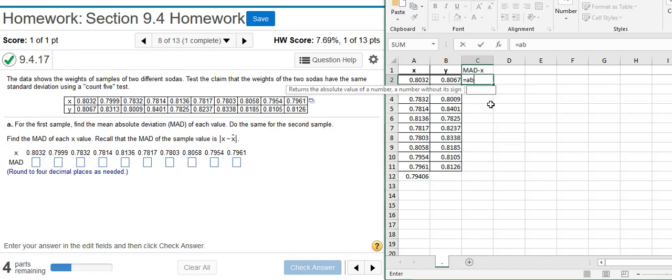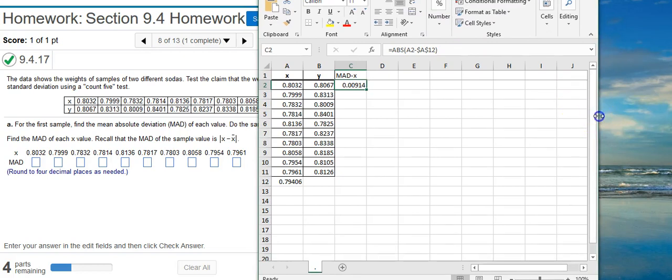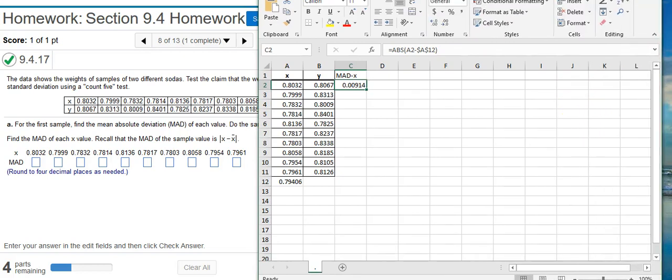So I'm going to put equals. Here's my absolute value function, ABS. Select my X. Minus X bar. It's down here at the bottom. And then I'm going to press F4 because I want these dollar signs to appear so that this number stays constant when I copy the formula down for all my other X values. Close this out. Hit Enter. And there's my first value. I'm asked to round to four decimal places. So I'm going to put this value and reduce it down to four decimal places.